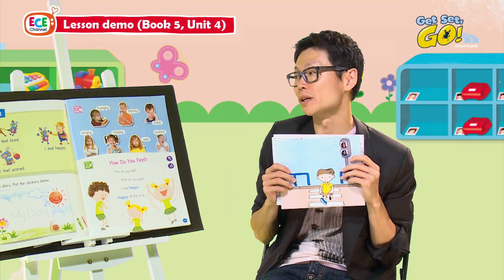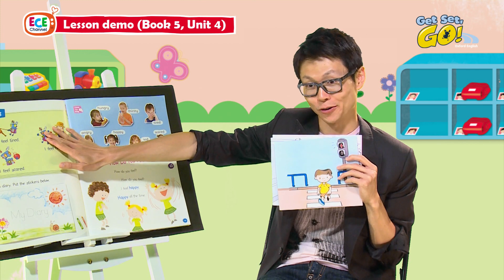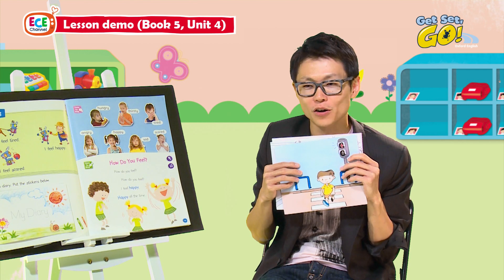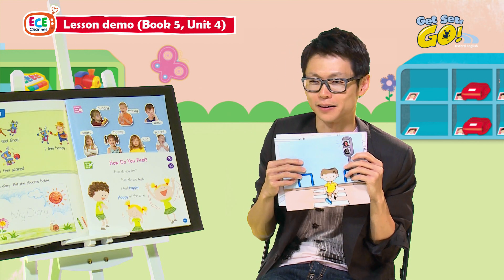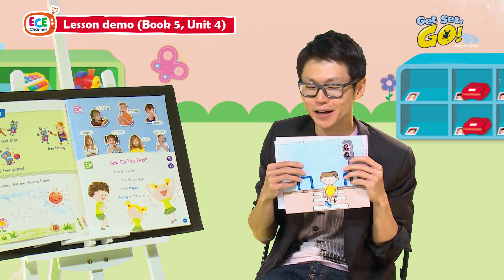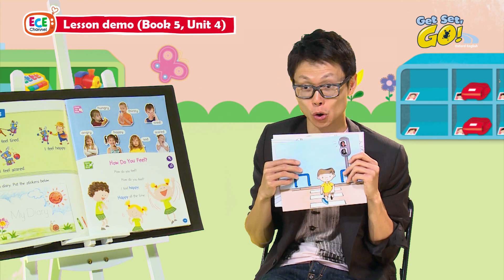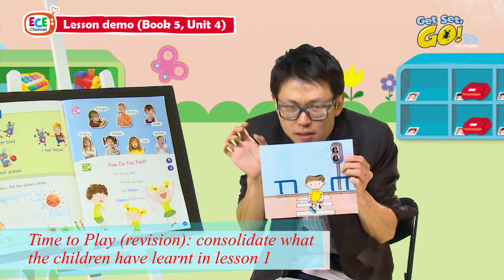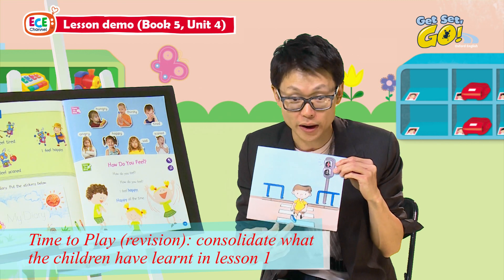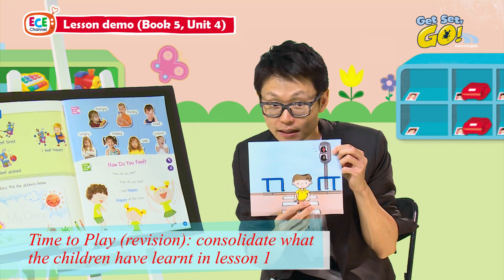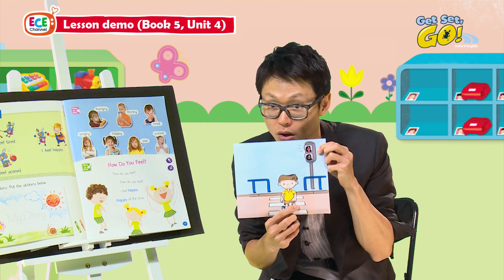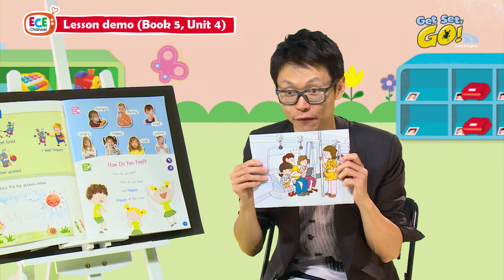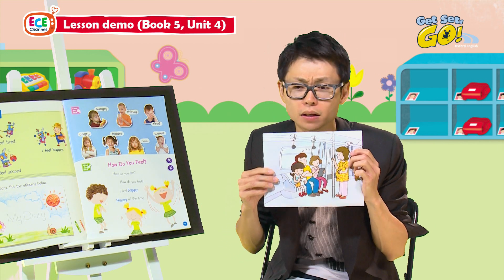Yesterday we talked about Achoo's diary — he felt tired when he couldn't move the ox and scared when he found a worm in the apple. Today I'm going to show you my diary. In the morning I felt very scared because I saw a boy crossing the road when the traffic light was red, not green.